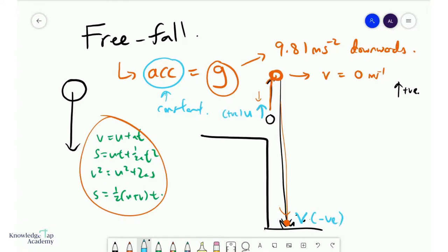u is a positive value. s will be simply this. It will be a negative value because I am displaced downwards from my original position.